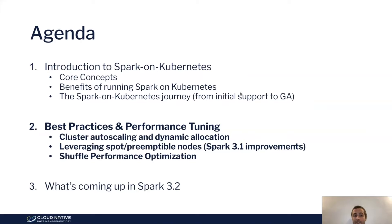Now let's get into best practices and performance tuning. First, we're going to talk about cluster auto-scaling and dynamic allocation — how to ensure your cluster goes up and down based on load instead of being fixed-size. Then we'll cover leveraging spot instances, which are cheaper, and recent improvements in Spark 3.1 and Spark 3.2 that help with that. Finally, we'll cover performance tuning, specifically how to get the best performance for shuffle-heavy workloads.